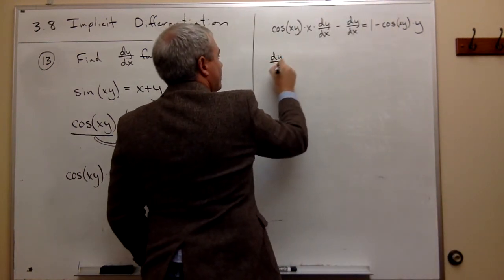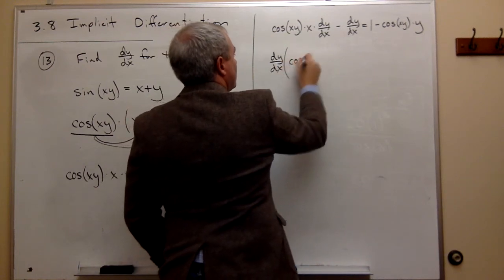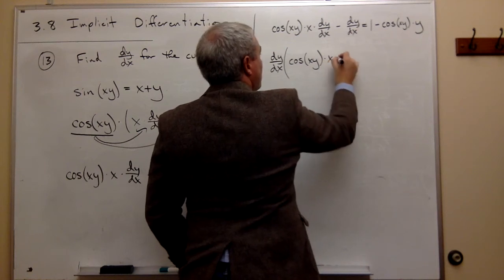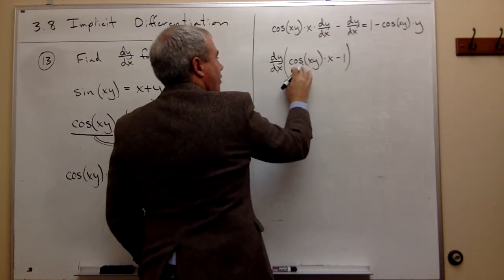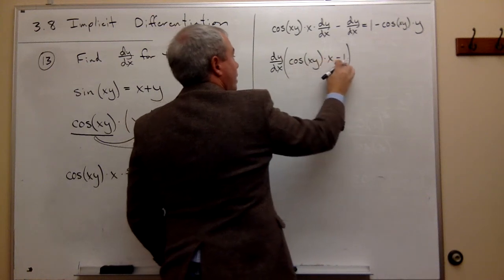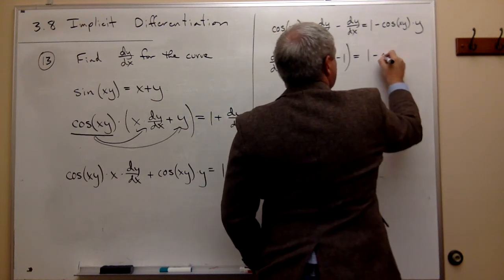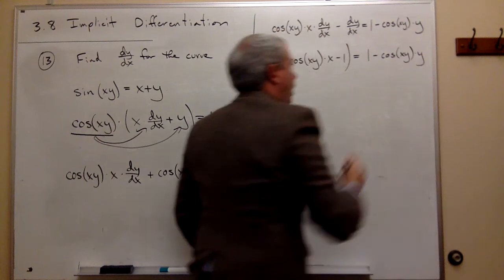If I do, I get dy/dx times cos(xy) times x minus 1. So I just factored out the dy/dx and got cos(xy) times x minus 1. And on the other side, I just have what I had before, 1 minus cos(xy) times y.